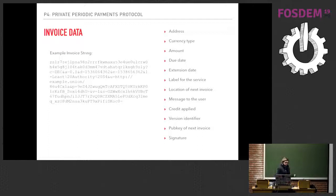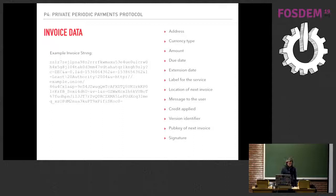This is what we spec'd out for an invoice — this is the invoice string. In this example, the customer is being asked to pay 0.1 ZEC by a particular date, September 4th, for the service Least Authority S4. If the payment is made by the deadline, the subscription will be extended by one month — approximately one million seconds — until October 4th.